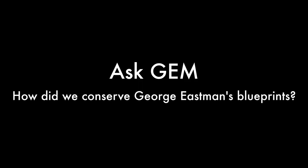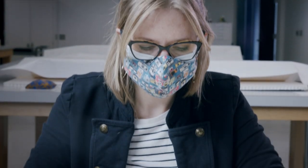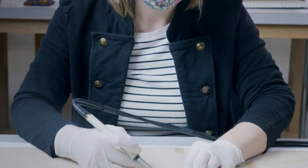I'm Sarah Casto, Assistant Conservator at the George Eastman Museum, and this is the blueprint for George Eastman's carriage house, stable, and greenhouses.